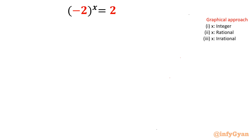Hello everyone, welcome to InfiJaan. In this video we are going to solve one extraordinary equation: (-2) raised to the power x equals 2 raised to the power x. I will solve using a graphical approach since the algebraic approach has issues — if I take logarithm, then x log of (-2), and log of a negative number is not defined. So I rejected that. But we can find a complex solution using algebra, which I will show you a little later.